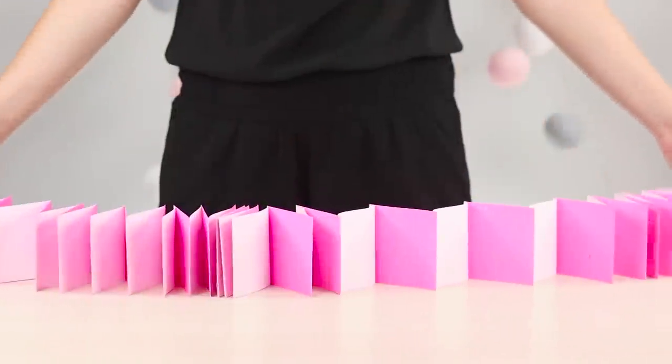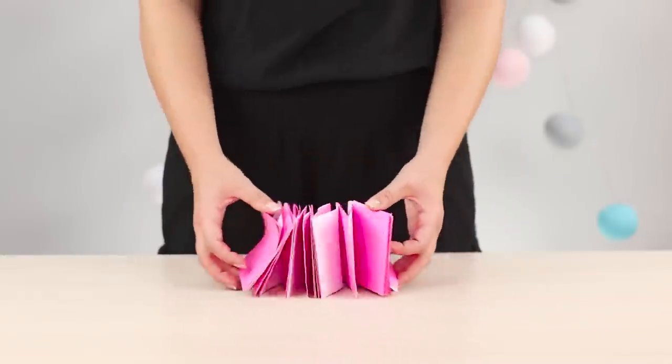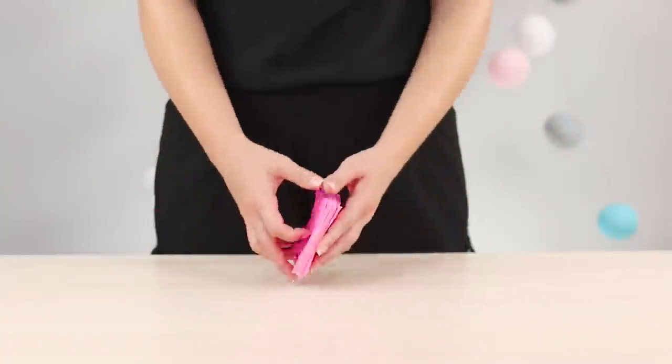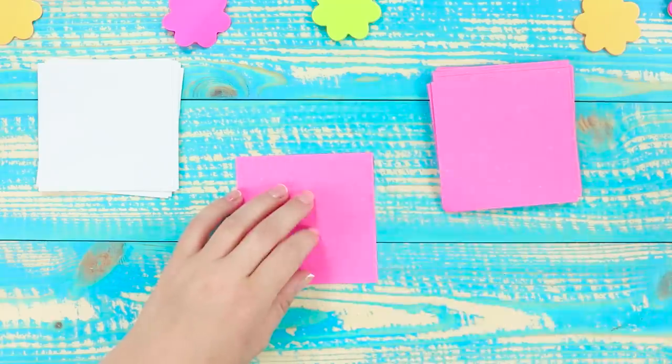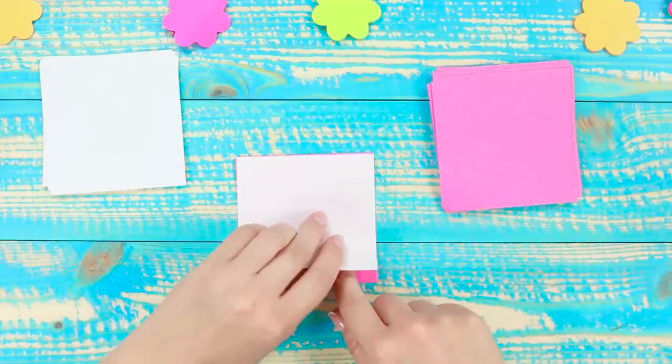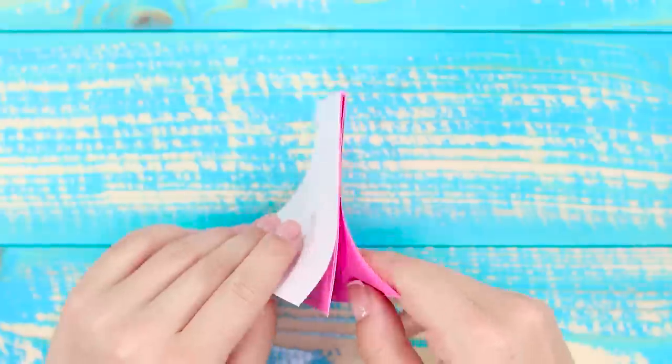Let's make an unusual anti-stress accordion that will save you from boredom and help you unwind. You will need colored sheets of paper for notes. Lubricate the edge of the pink sheet with glue. Glue a white piece on top. It should look like this.